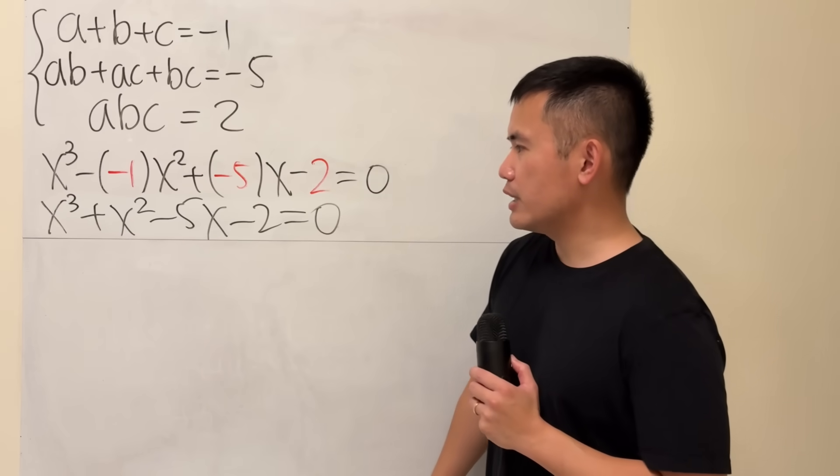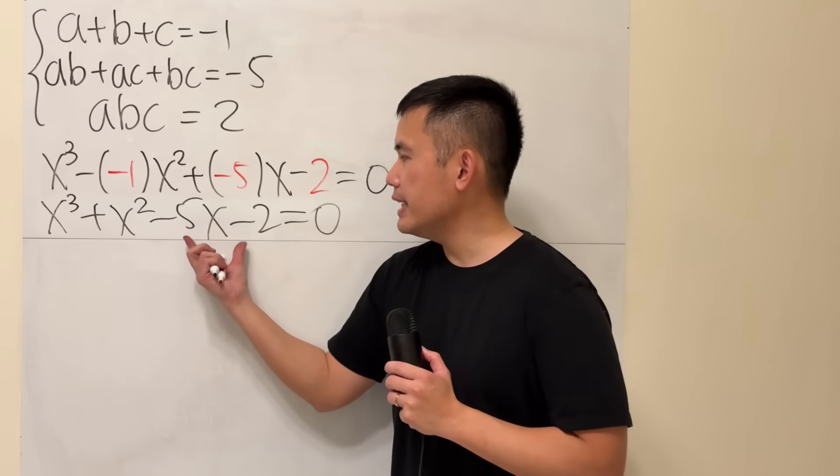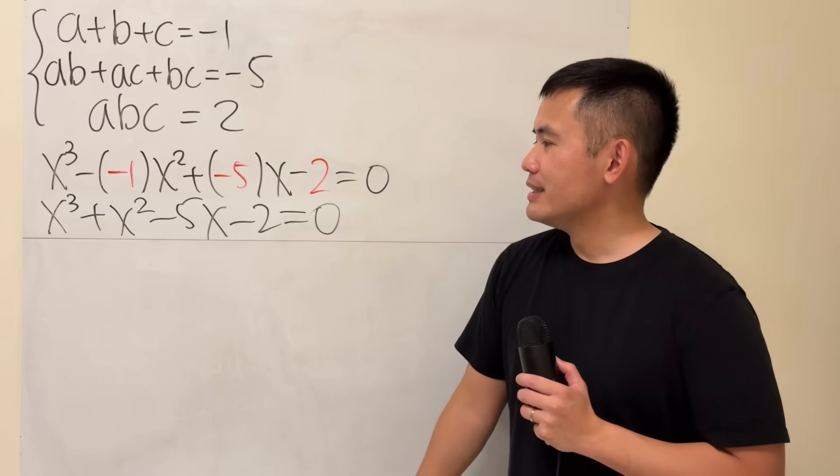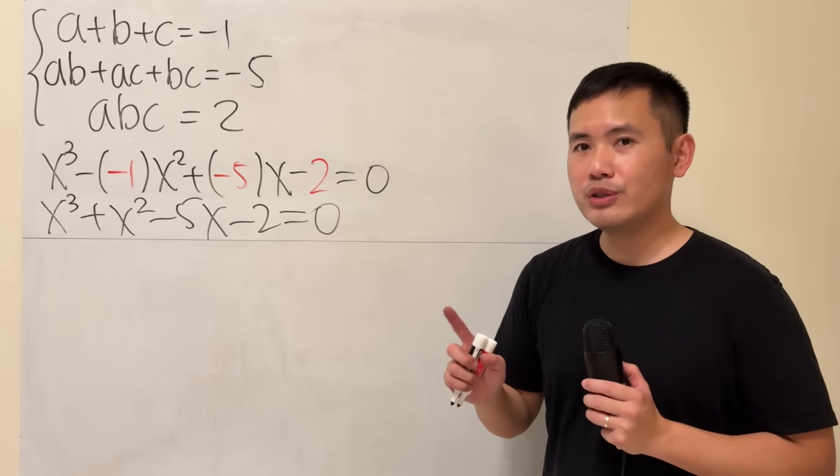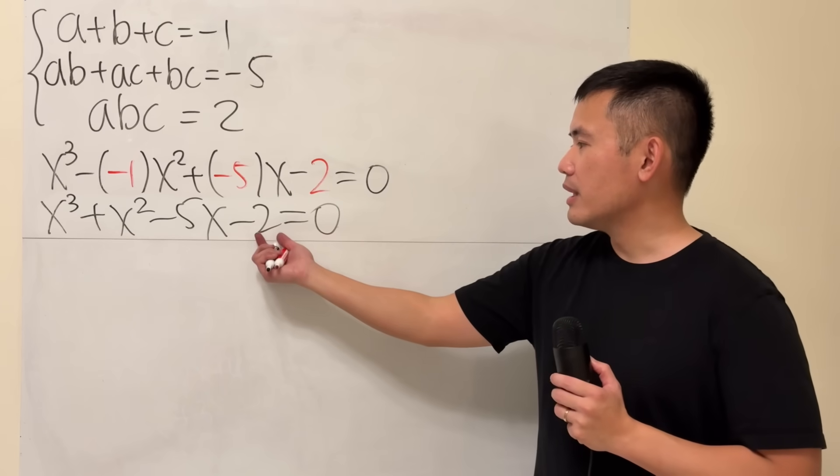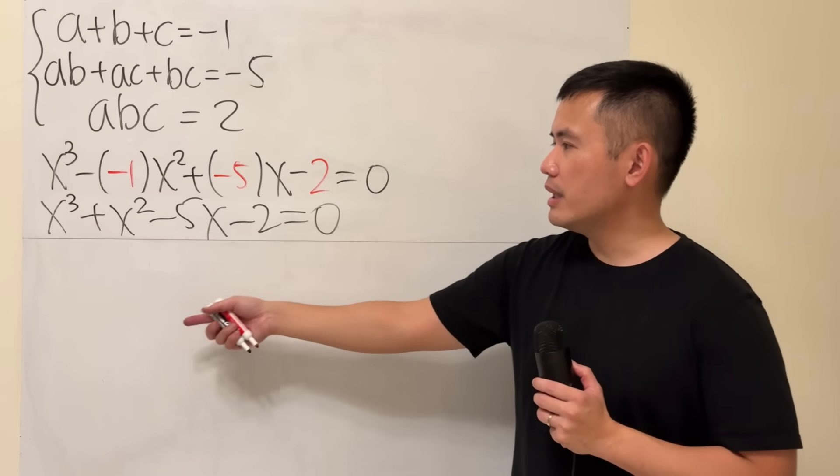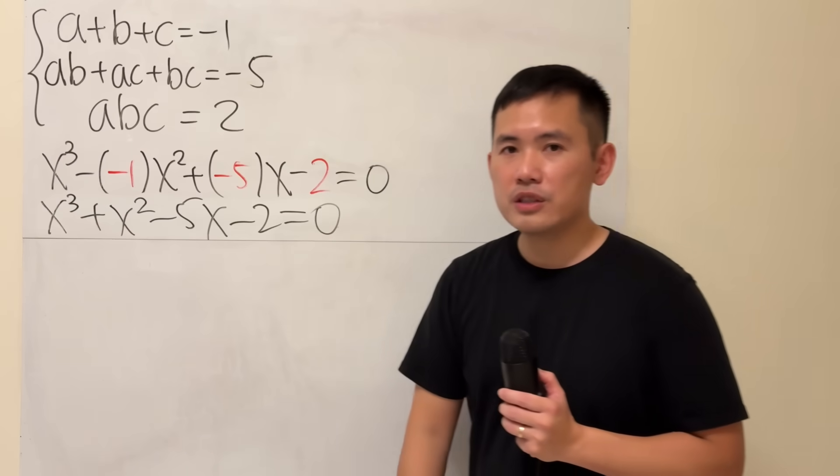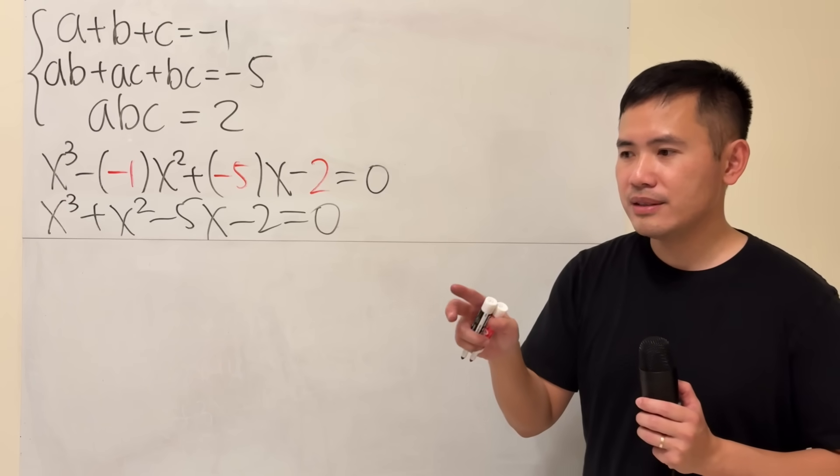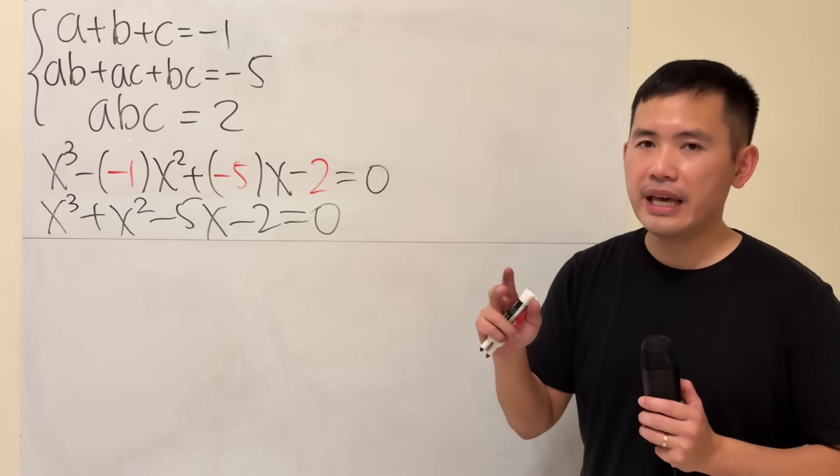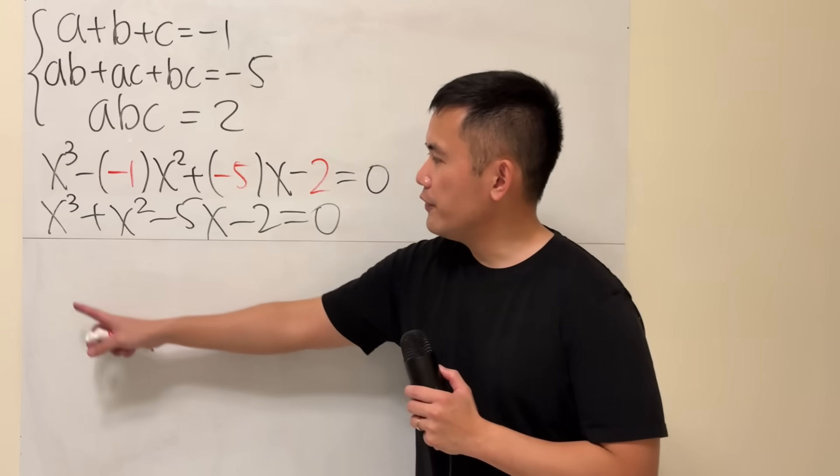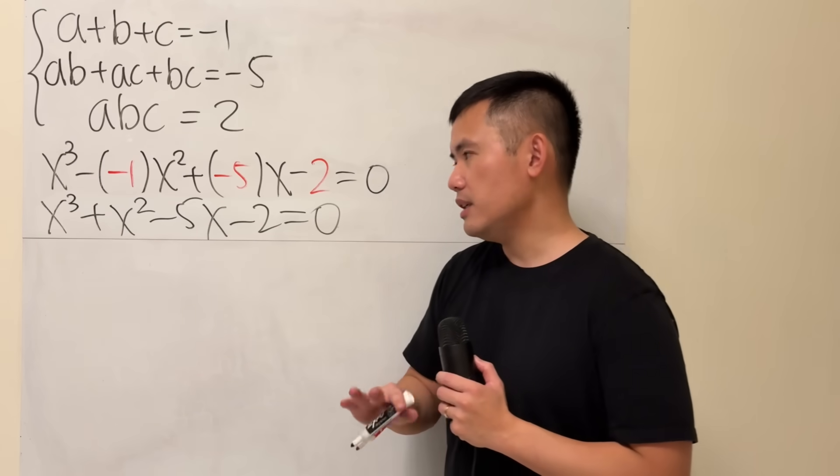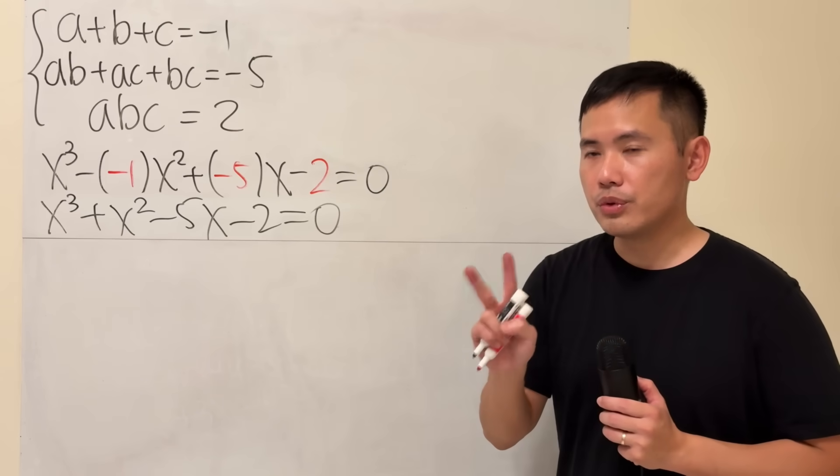Unfortunately, we cannot just do factor by grouping with the first two terms and the last two terms. So let's try the rational zero theorem. The last term is a minus 2, and the leading coefficient is 1. So we just have to try 1, 2, negative 1, and negative 2. If you plug in 1 into all the X's, it's not going to work. But if you do 2, it will.